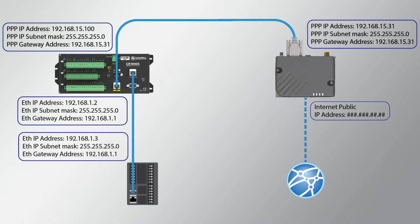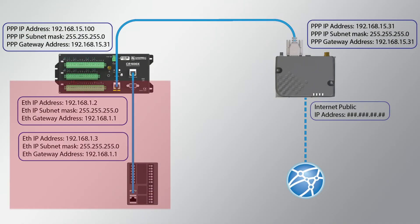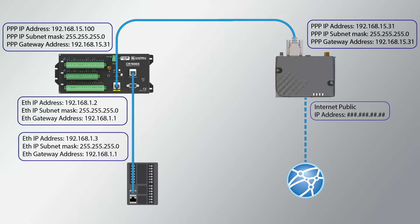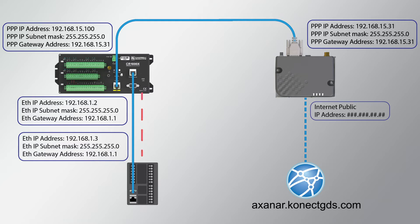Because dataloggers can support multiple IP networks at the same time, one active IP interface is designated as the default interface, usually the one that becomes active first on power-up — typically the Ethernet port. But what happens when the datalogger needs to connect to a device not on the default interface? In this example, the CR1000X is trying to connect to axonar.connectgds.com, the Connect Data Service from Campbell Scientific, but since Ethernet is the default interface, the datalogger attempts to connect over Ethernet instead of PPP. This attempt will fail because the connection to Axonar is through the PPP interface, not Ethernet.